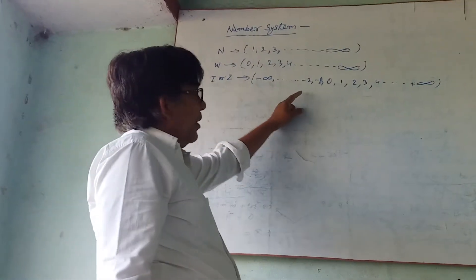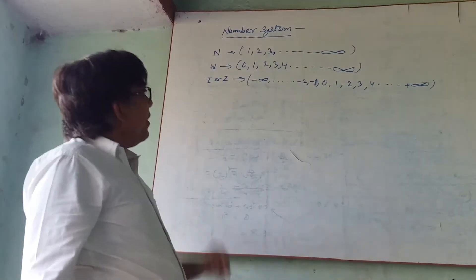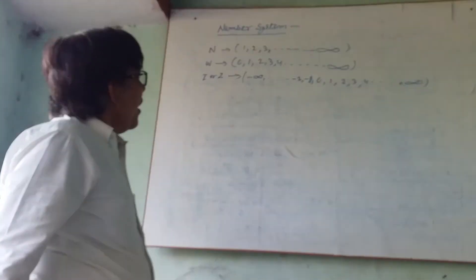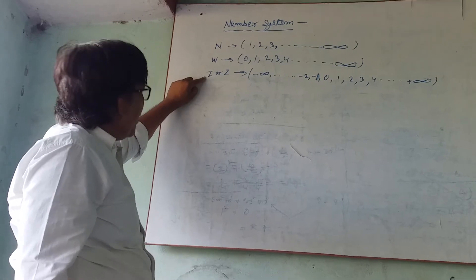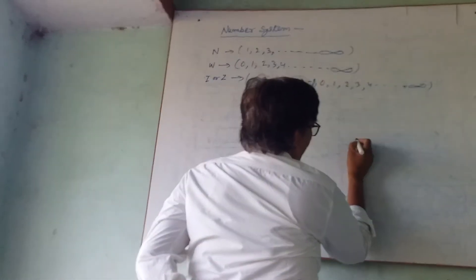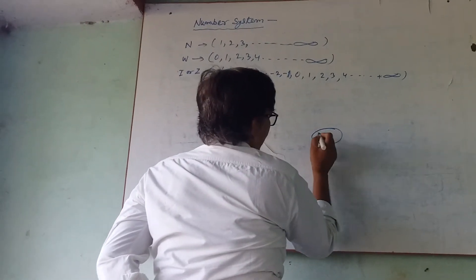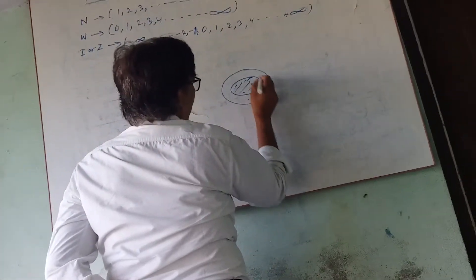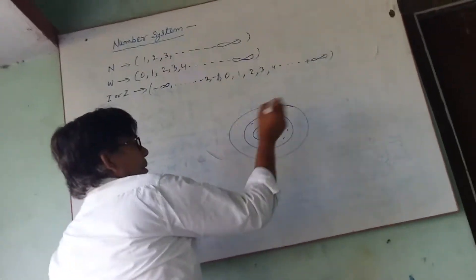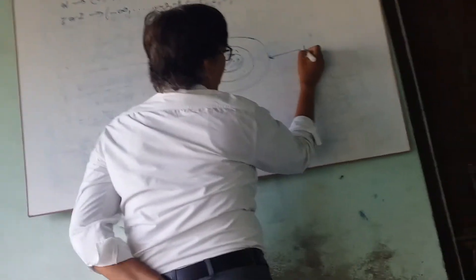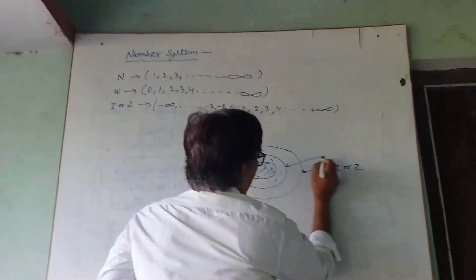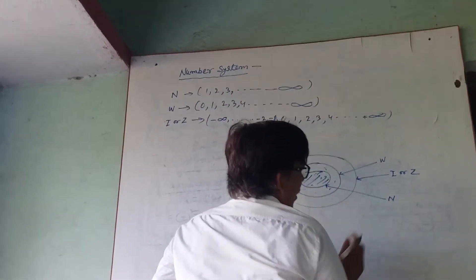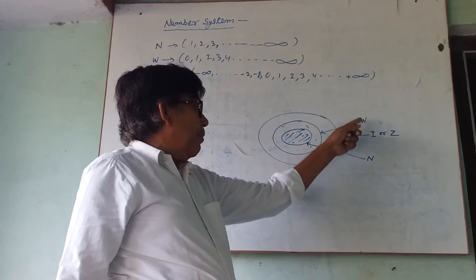All whole numbers are a subset of integers, and natural numbers are also a subset of integers. That is, natural numbers are a subset of whole numbers, which means whole numbers include natural numbers, and integers include whole numbers. This is natural numbers surrounded by whole numbers, and this is the integer — Integer includes Whole number, which includes Natural number.